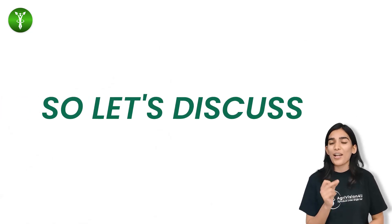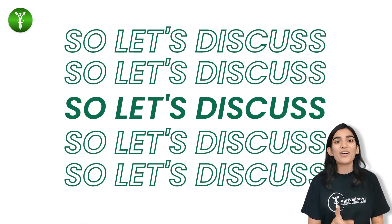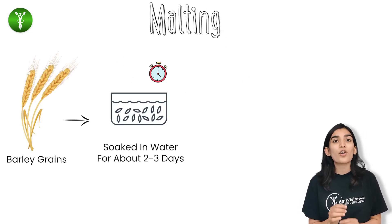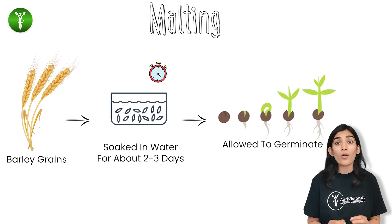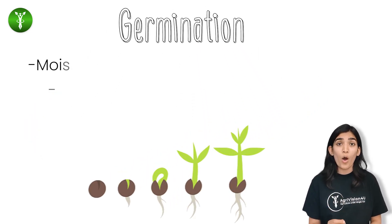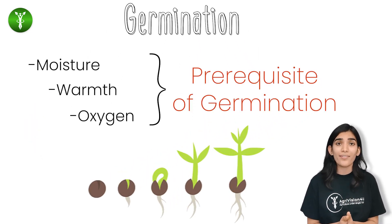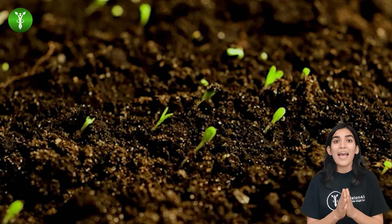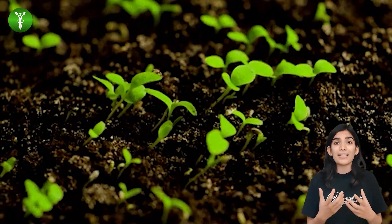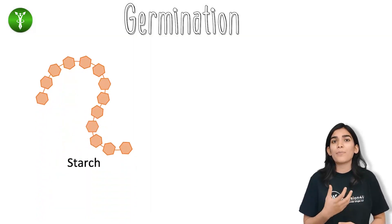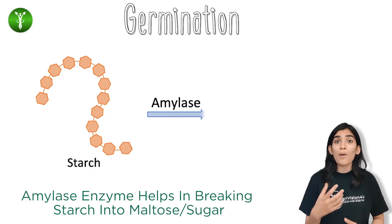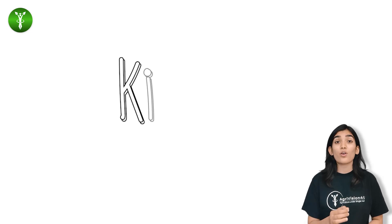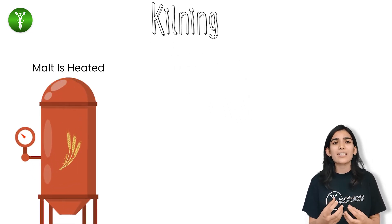There are several steps involved in the beer making process. The first step is called malting, where barley grains are soaked in water for about two to three days and are allowed to germinate. For germination, moisture, warmth, and oxygen are required. Germination is one of the most crucial processes of beer making, as it allows the formation of amylase enzyme, which helps break down starch present in the barley grains into maltose, that is sugar.